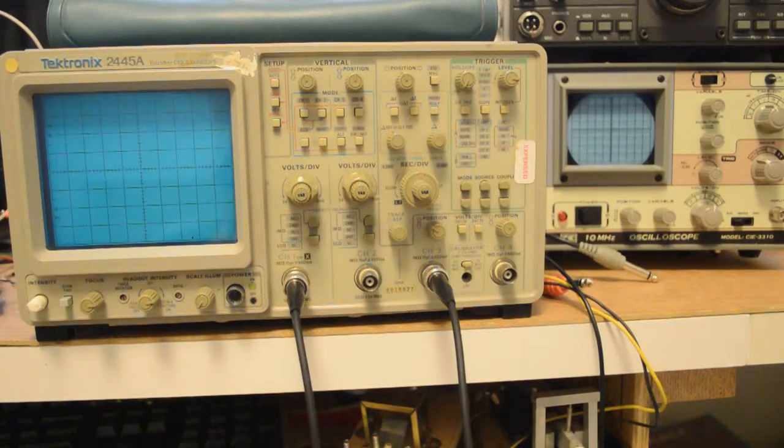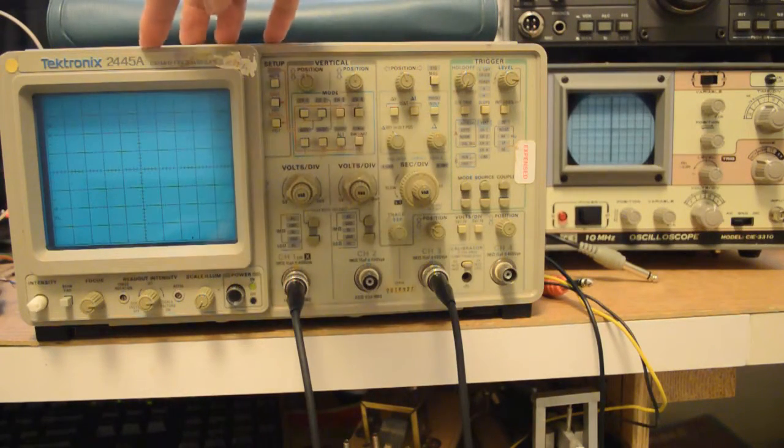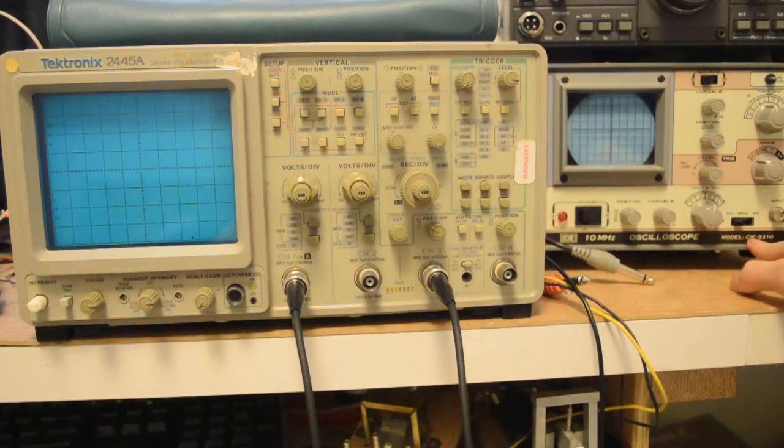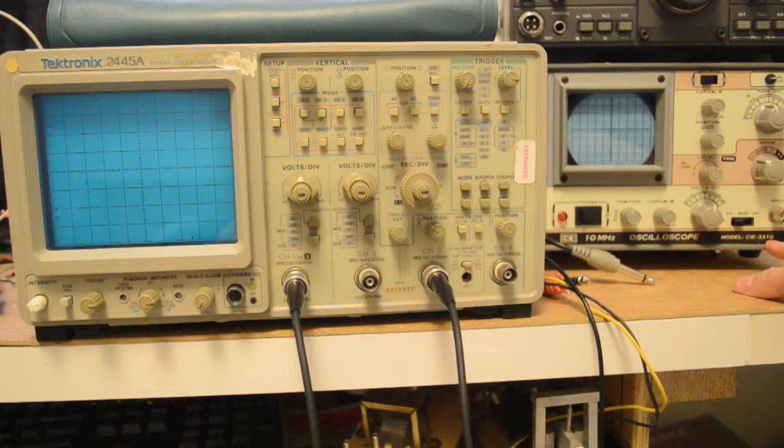Okay, so we have the two scopes side by side. This is a 2445A, and it's 150MHz. That is a CIE 3310, 10MHz.